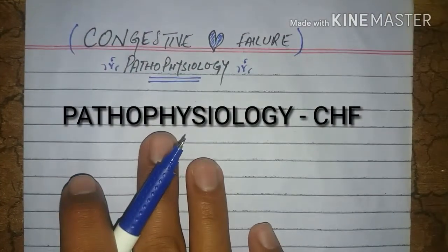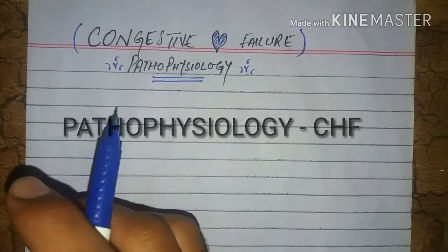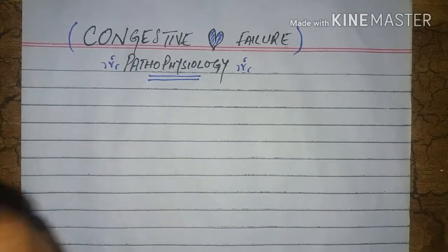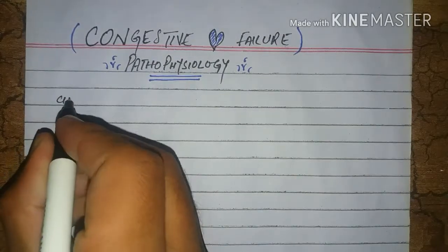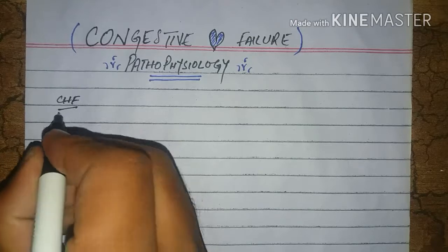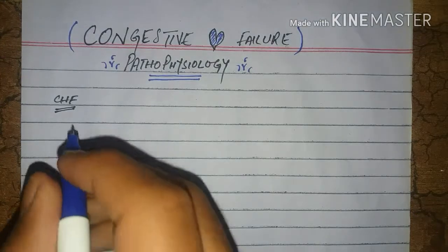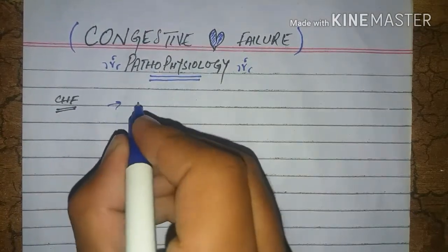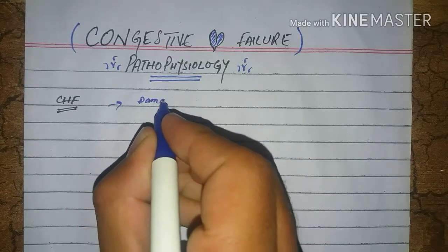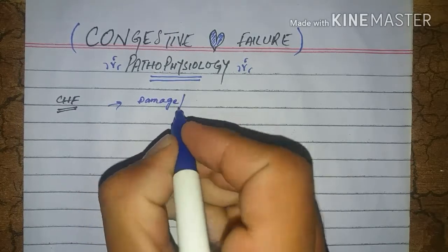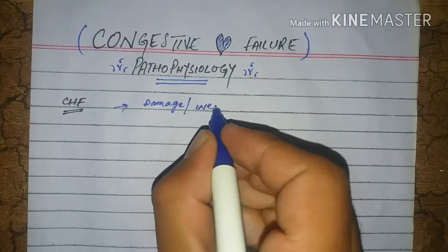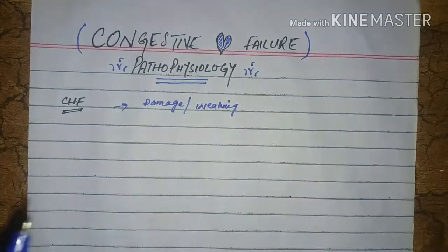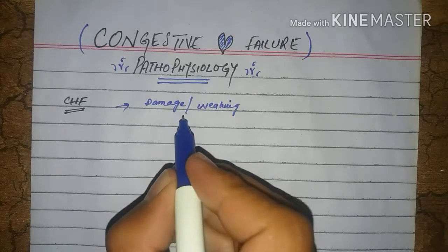Today our topic is pathophysiology of the heart. First of all, how does congestive heart failure occur? Congestive heart failure occurs due to the damage or the weakening of the heart muscles.